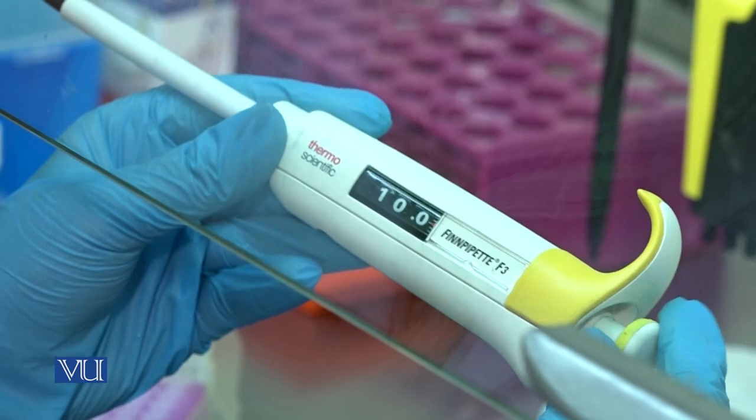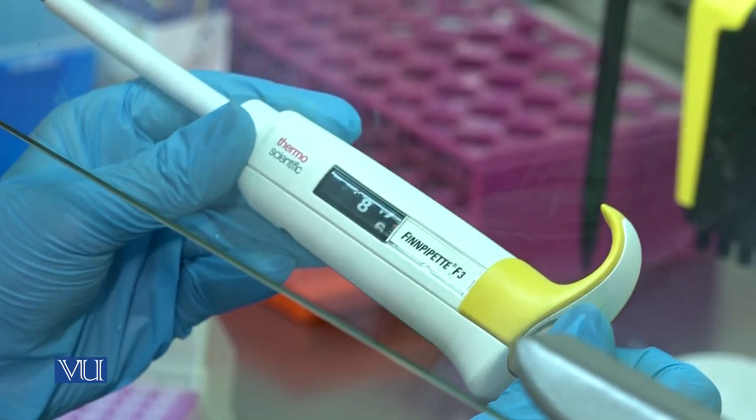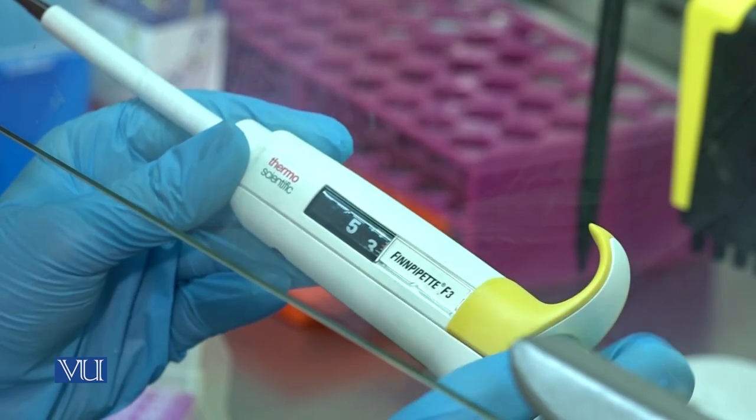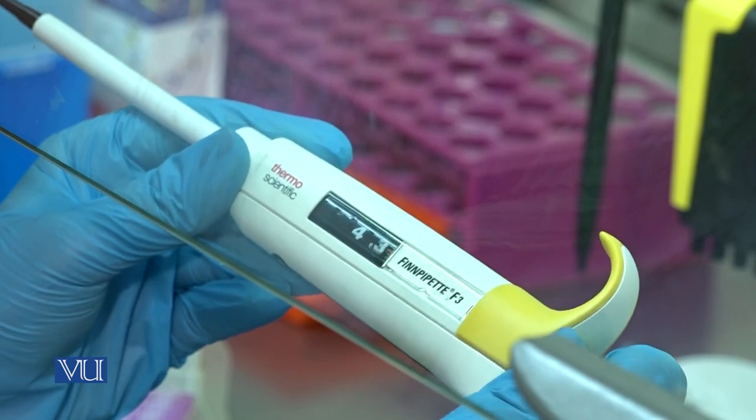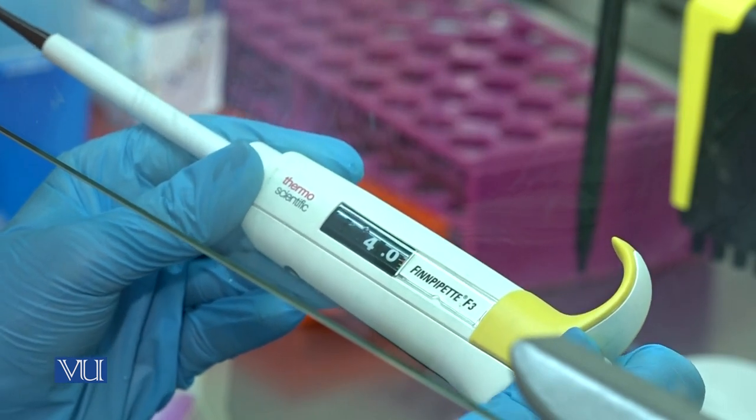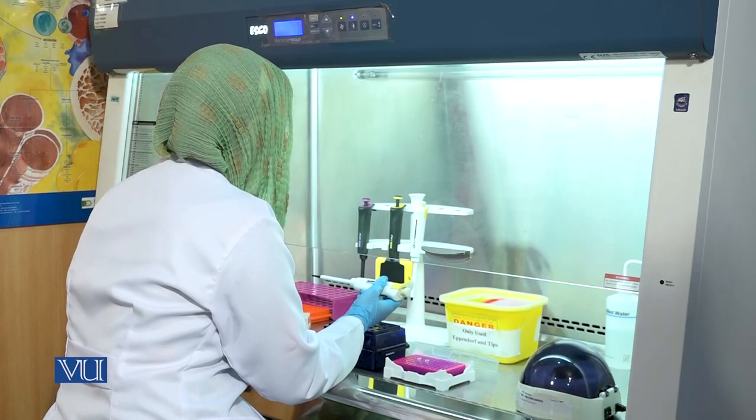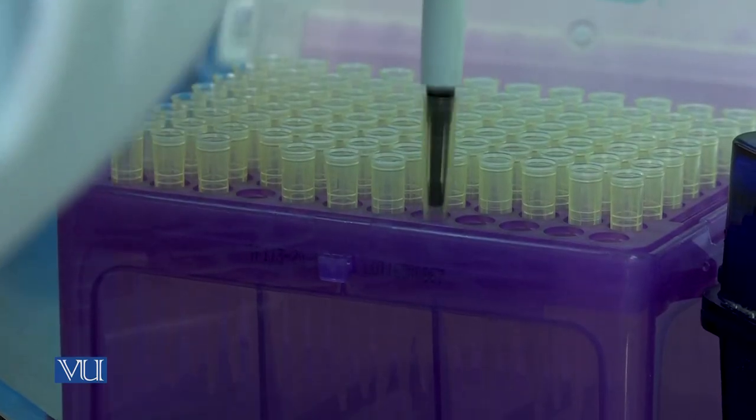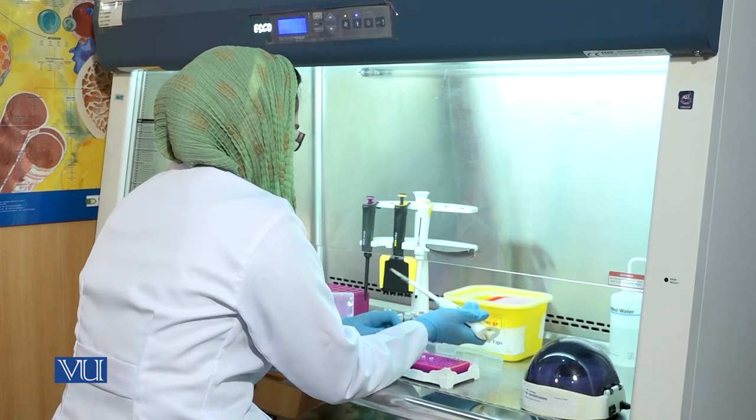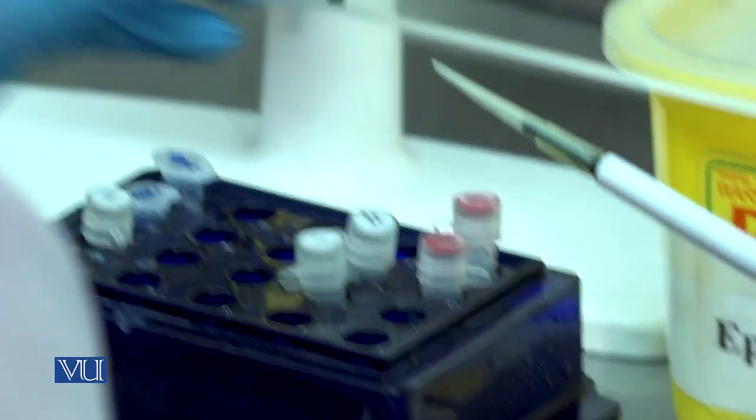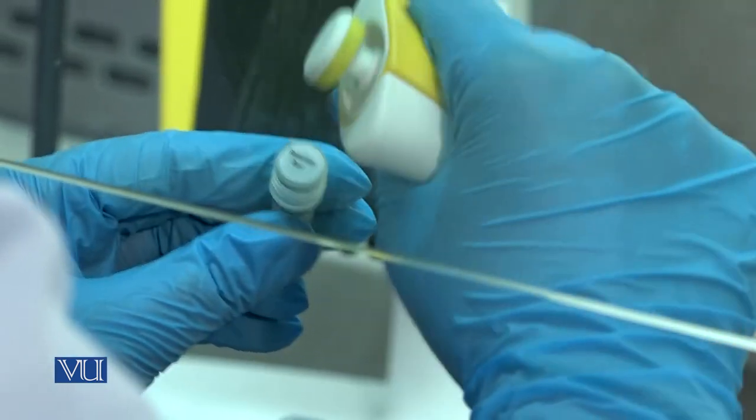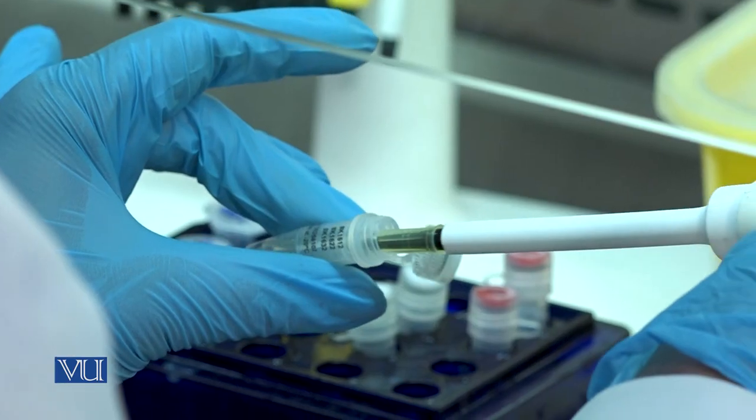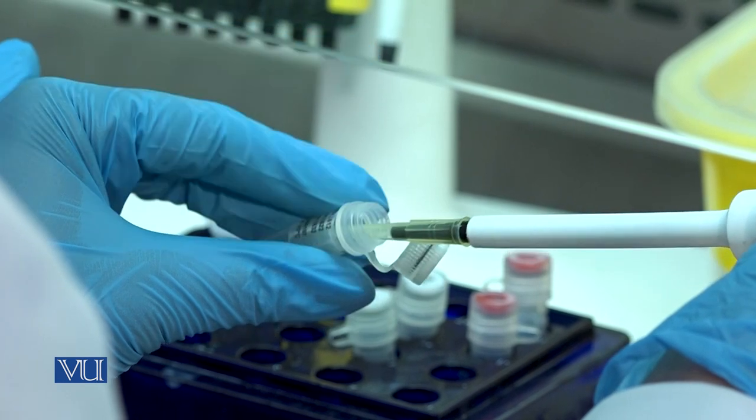Set the micropipette to 4 microliters. Take 4 microliters of reaction buffer and add it in the PCR tubes.